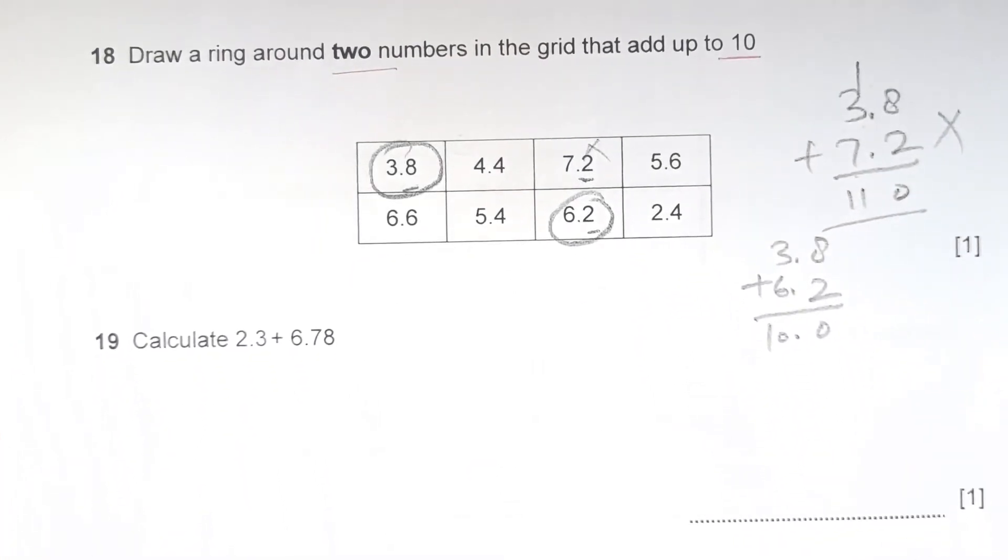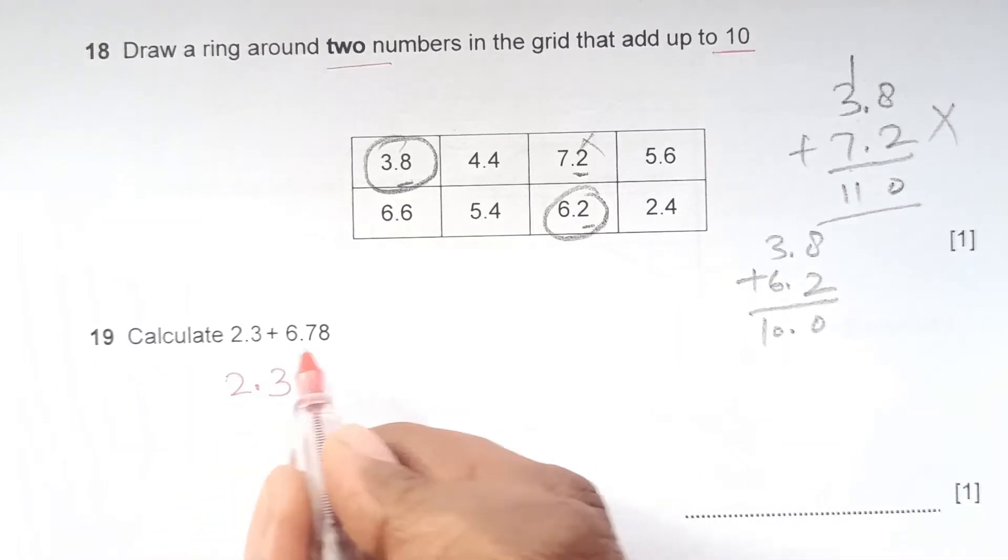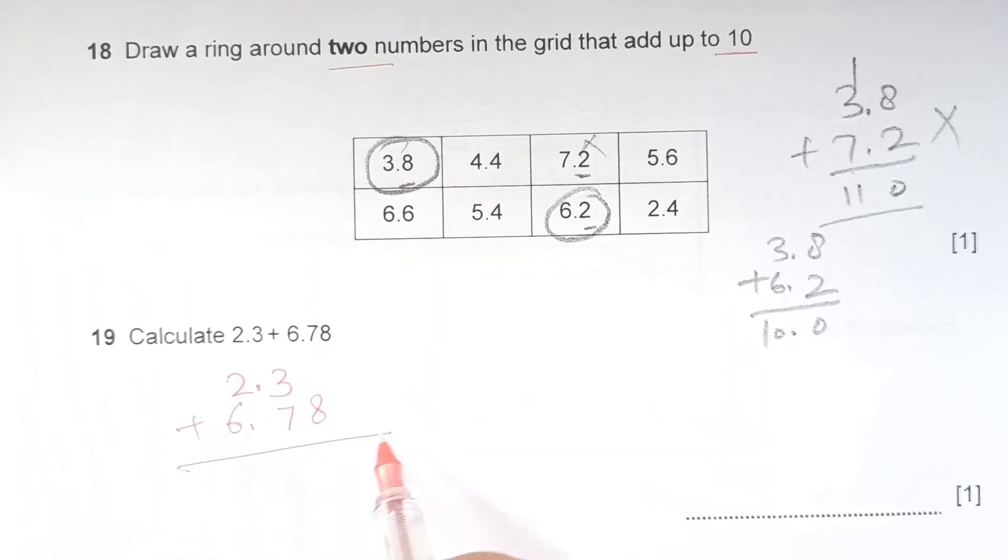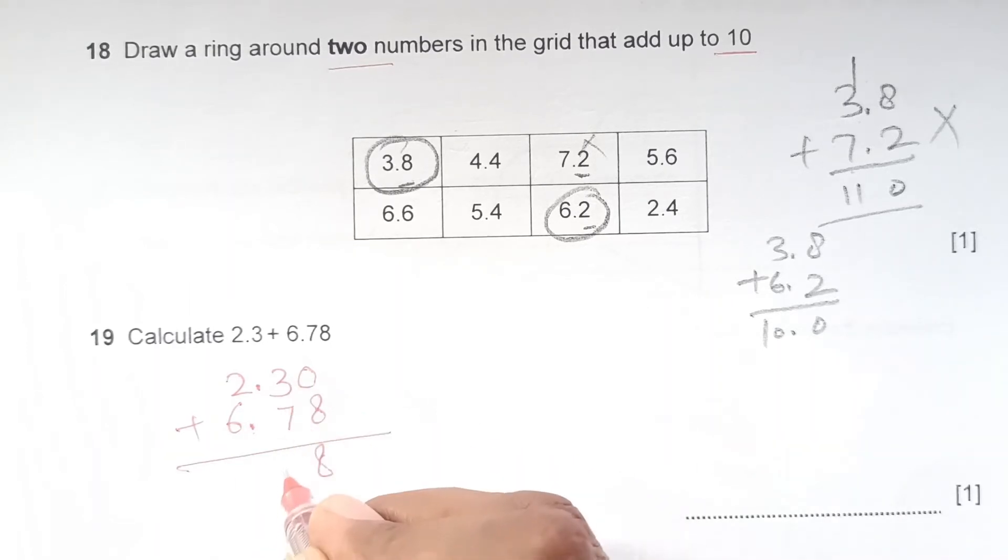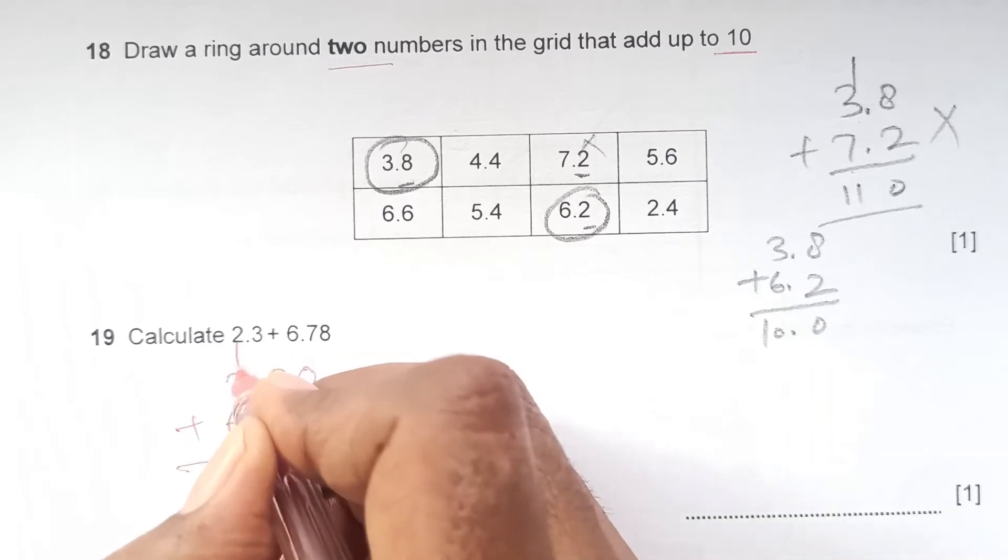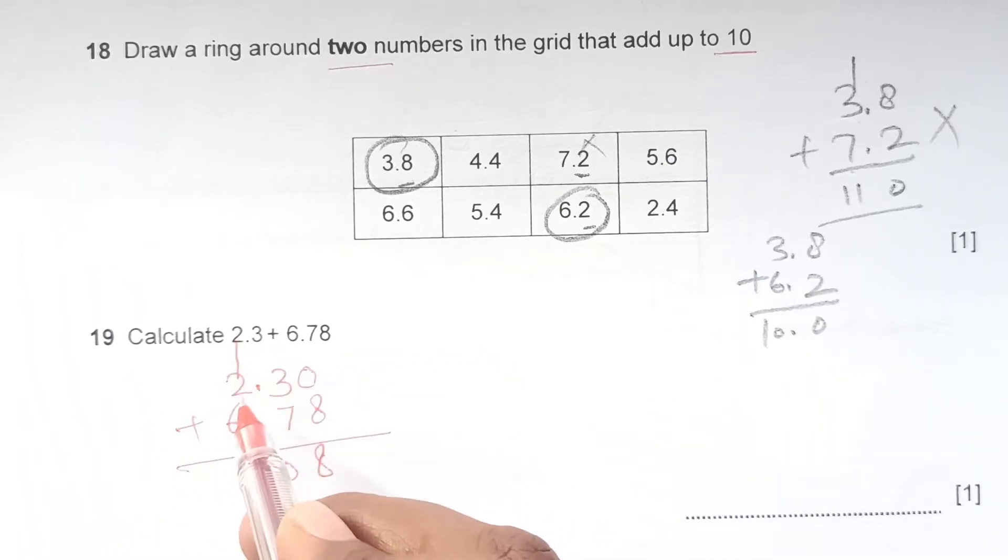Number 19. Calculate 2.3 plus 6.78. You should write down digit under digit and decimal should come under decimal. So 2 and 6 came on the left hand side to the whole part. We can fill the remaining with 0. This is 8 plus 0 is 8. 7 plus 3 is 10, 1 carry here. So 6 plus 2 is 8 plus 1 is 9. So 9.08.